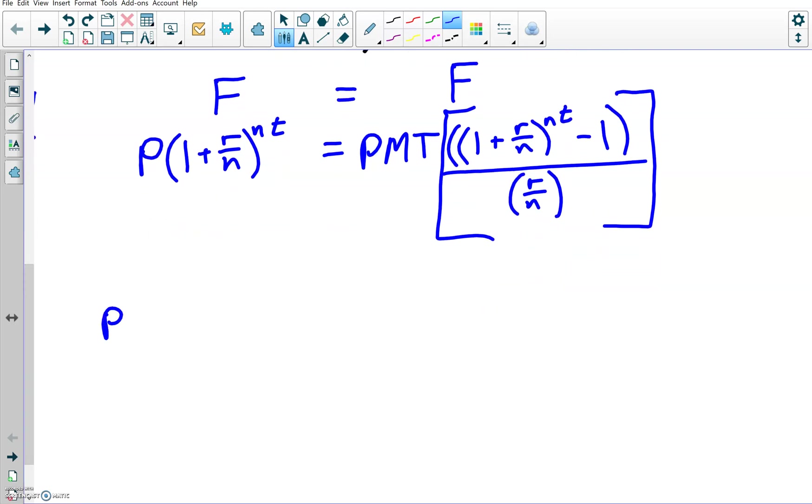So I'm going to get on the left side p times 1 plus r over n to the n times t power and I'll make a fraction here. So when you do the reciprocal, you flip the fraction, so r over n will actually get multiplied by the top and then all this stuff will get multiplied into the bottom. And then this will equal just the payment because when you multiply a fraction by its reciprocal it becomes 1.